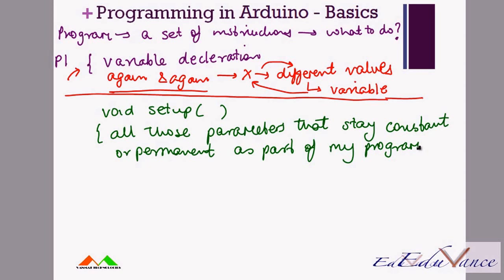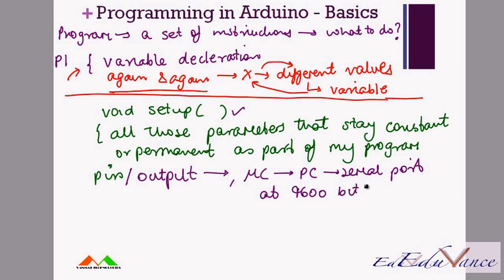There are different parameters that stay constant or permanent as part of my program. For example, if I want that a particular pin or point on my board should always be of the type output, means that it's giving something, I would do that declaration in my setup. Suppose I want to instruct my Arduino board or the microcontroller that I would like to communicate with my computer via the serial port at a fixed speed of 9600 bits per second. We will cover the serial port in a future lecture, but just for now assume that I want to communicate with my PC at a fixed speed, I would specify that here.